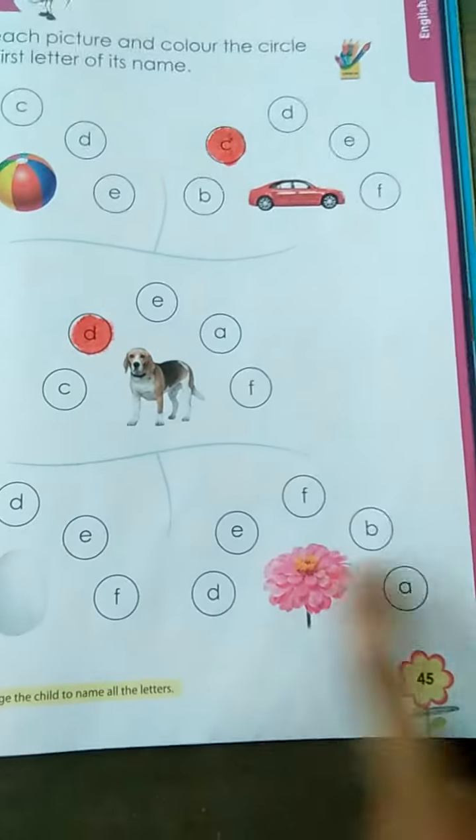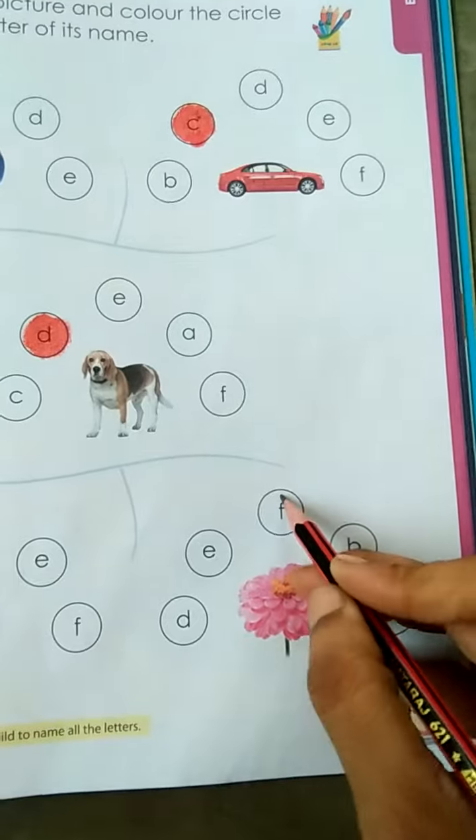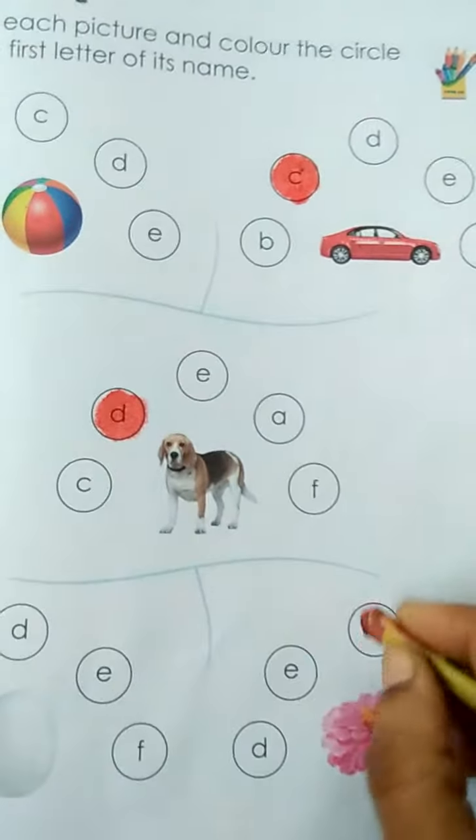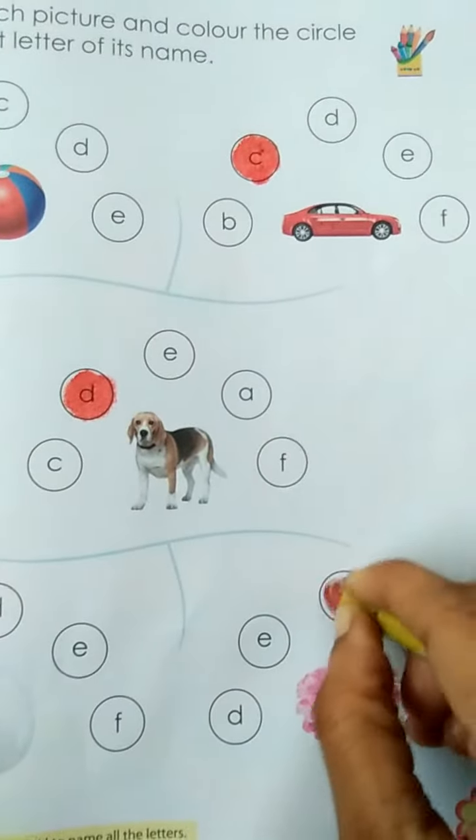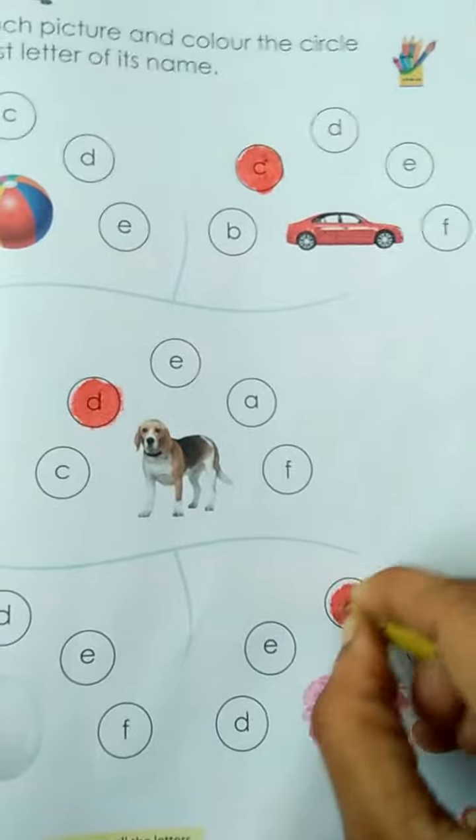Which picture is this? Yes, flower. F for flower. Then you have to color the circle of F like this.